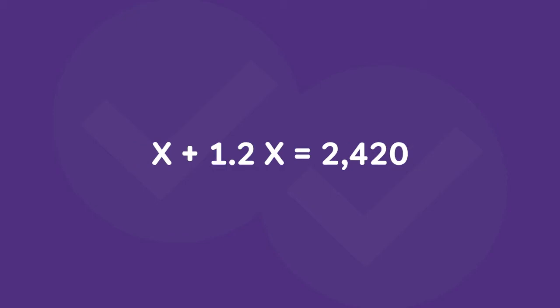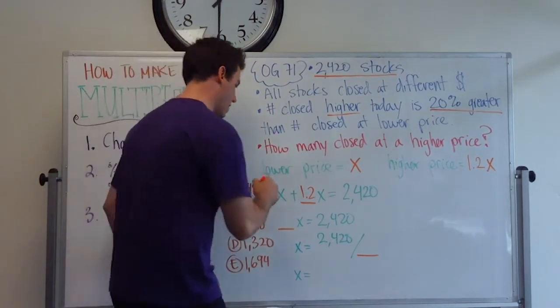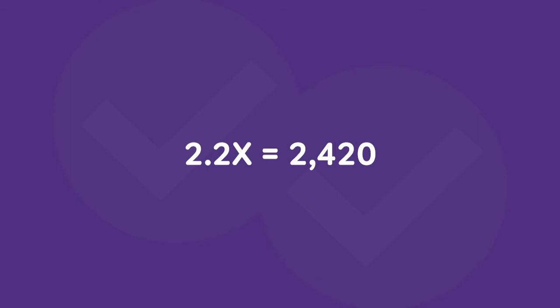And then if we want to solve this, we know X plus 1.2X, this X is like a 1. And so we get 2.2X equals 2,420. Now we can divide by 2.2 and bring that over here. We're solving for X. So X equals 2,420 divided by 2.2.